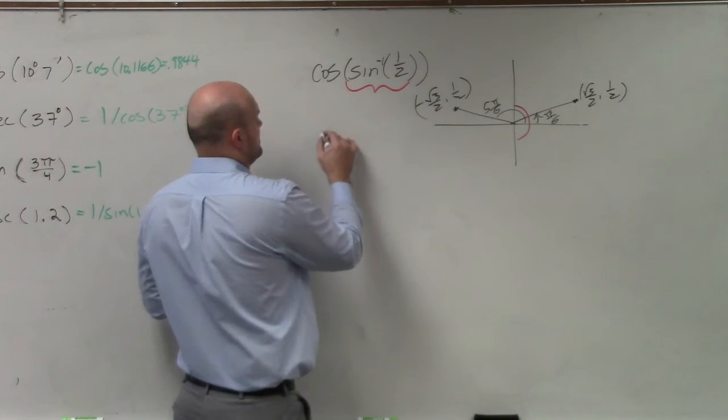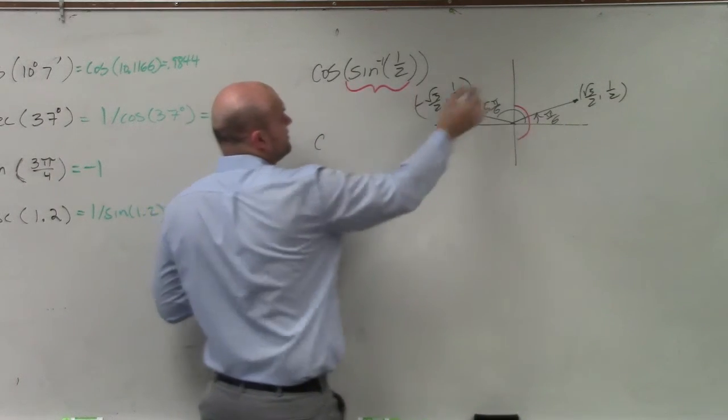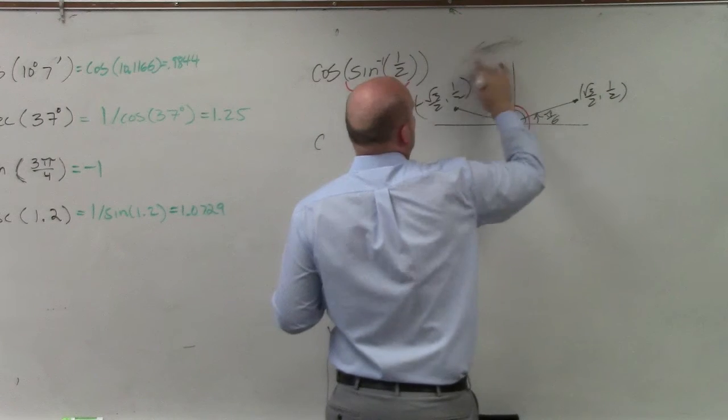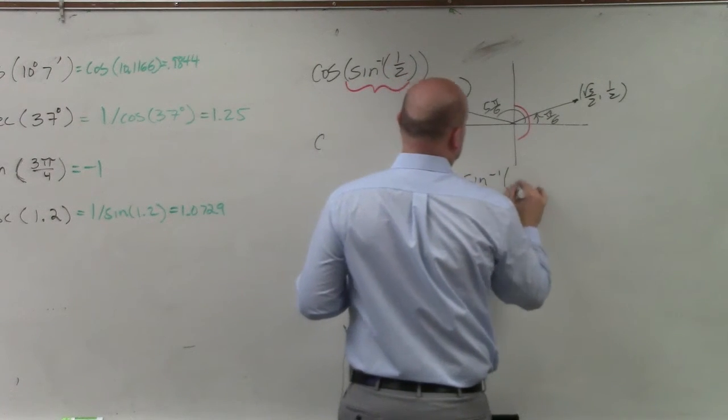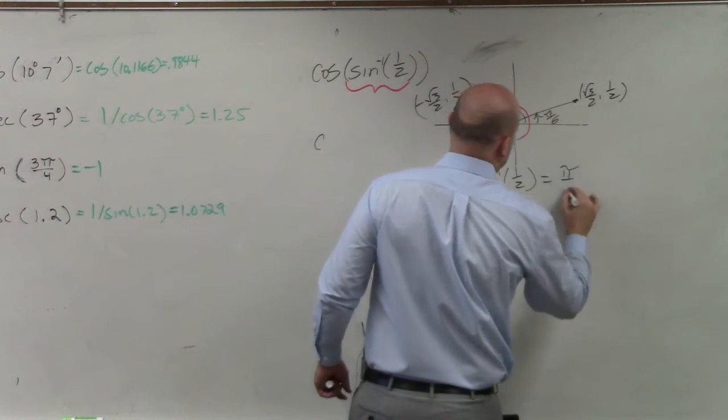Pi over 6. So the cosine, cosine, I'm sorry, the sine inverse of 1 half is equal to pi over 6.